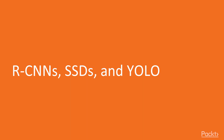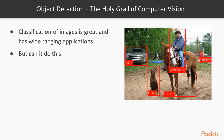Hi and welcome to this video where we take a look at some deep learning object detectors such as RCNNs, SSDs, and YOLO. Object detection is actually the holy grail of computer vision. It allows us to do things like detect cars, dogs, horses, and people simultaneously — something we've seen before in face and pedestrian detectors in earlier videos.